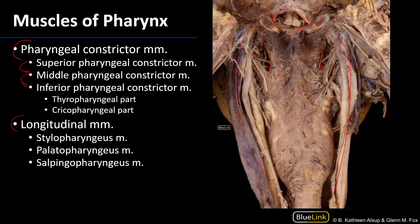This is the superior pharyngeal constrictor muscle. It takes its origin from various portions of the skull, and each muscle meets its counterpart along a midline pharyngeal raphe. We also have a middle pharyngeal constrictor, which takes its origin from the hyoid bone. We can see the greater cornu of the hyoid, and each muscle meets its counterpart along a single midline raphe.